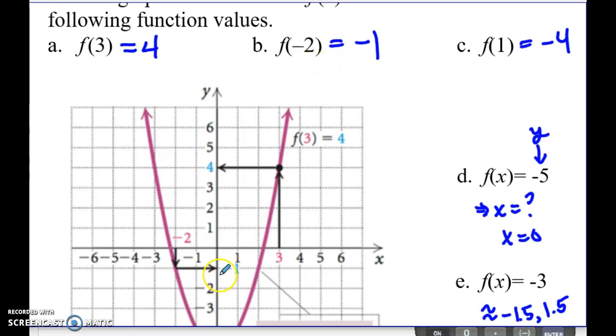Similarly here for f of negative 2, we go back to negative 2 on the x-axis. This time we have to go down in order to intersect with the graph. Once we do, we look over and say, what's the y value? It's negative 1.